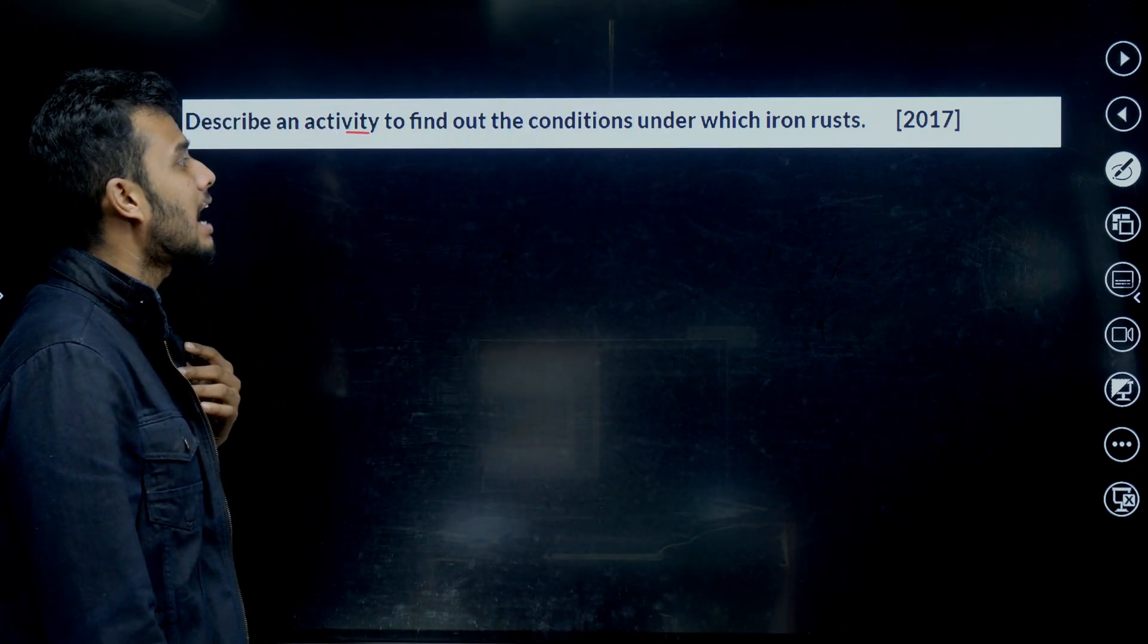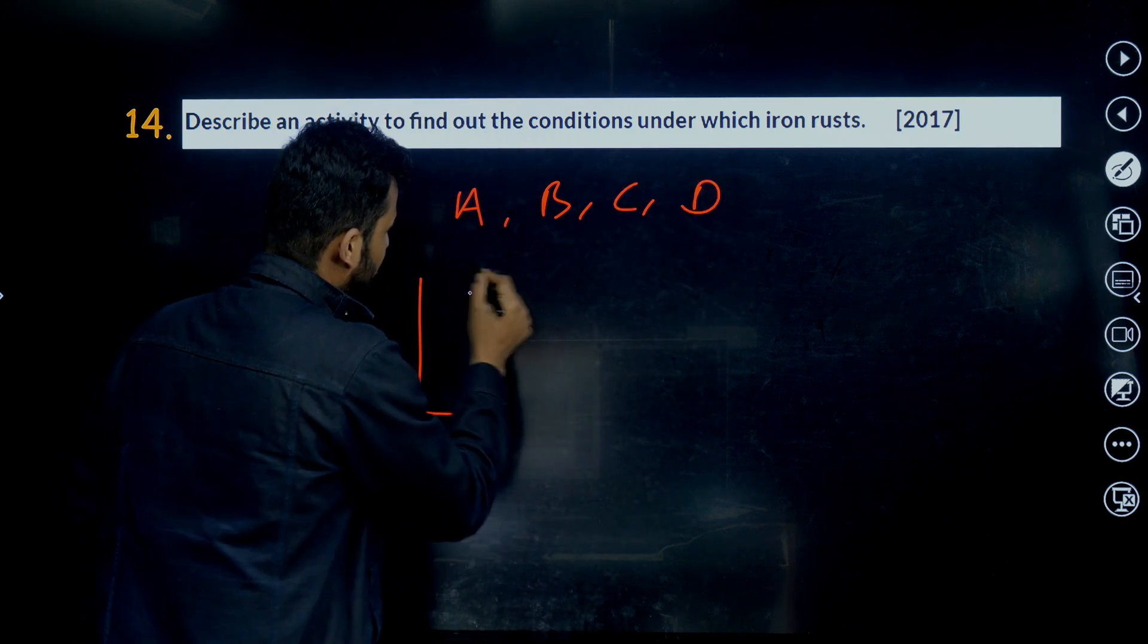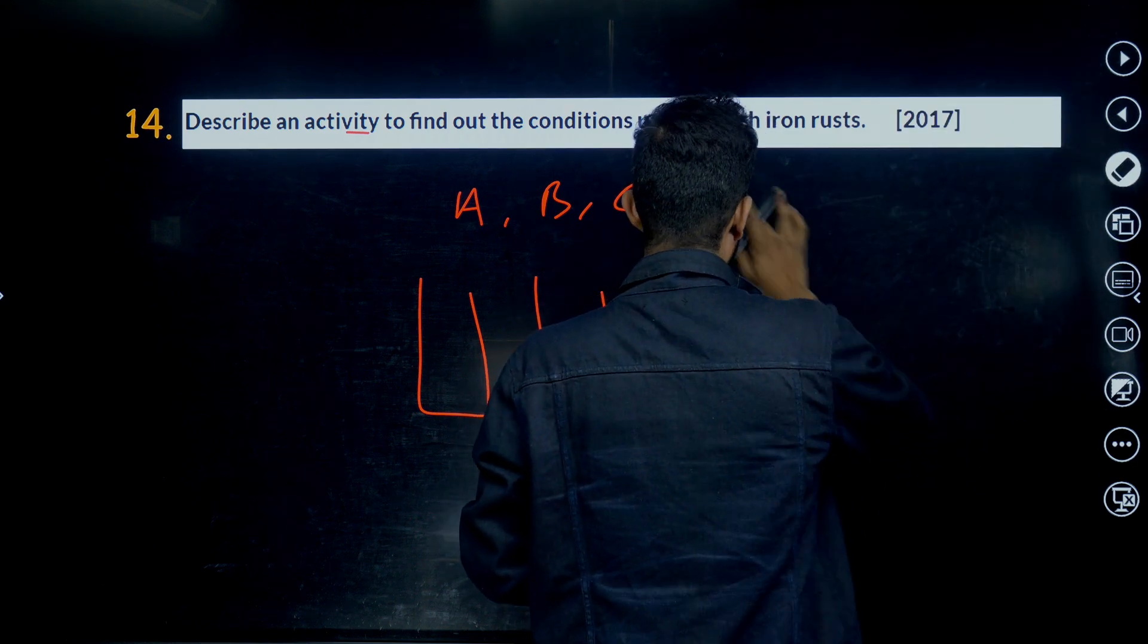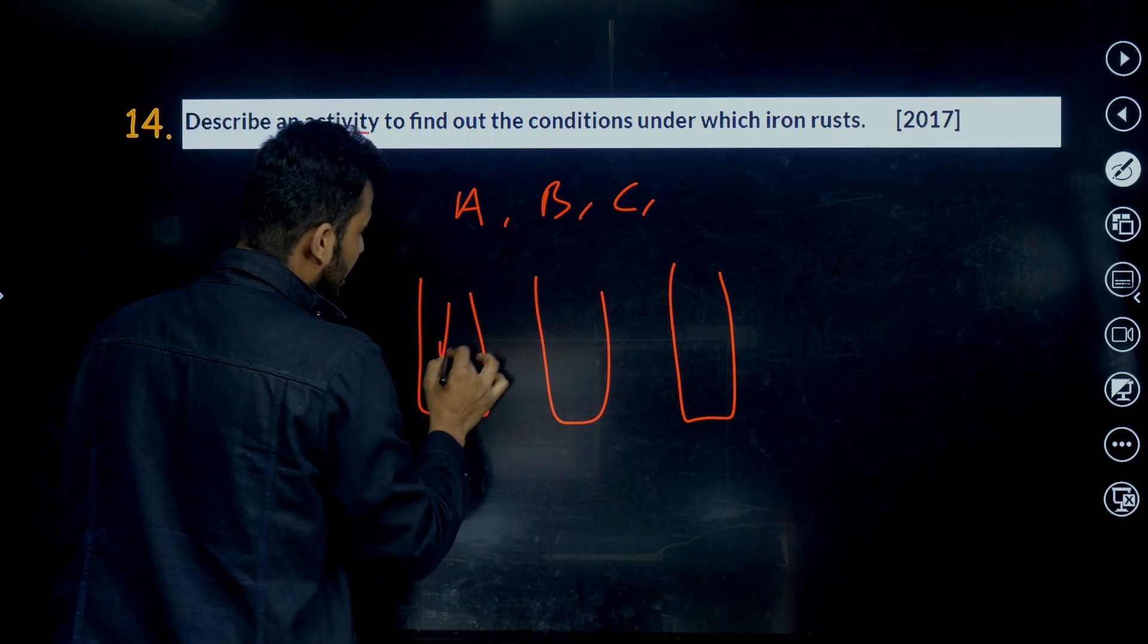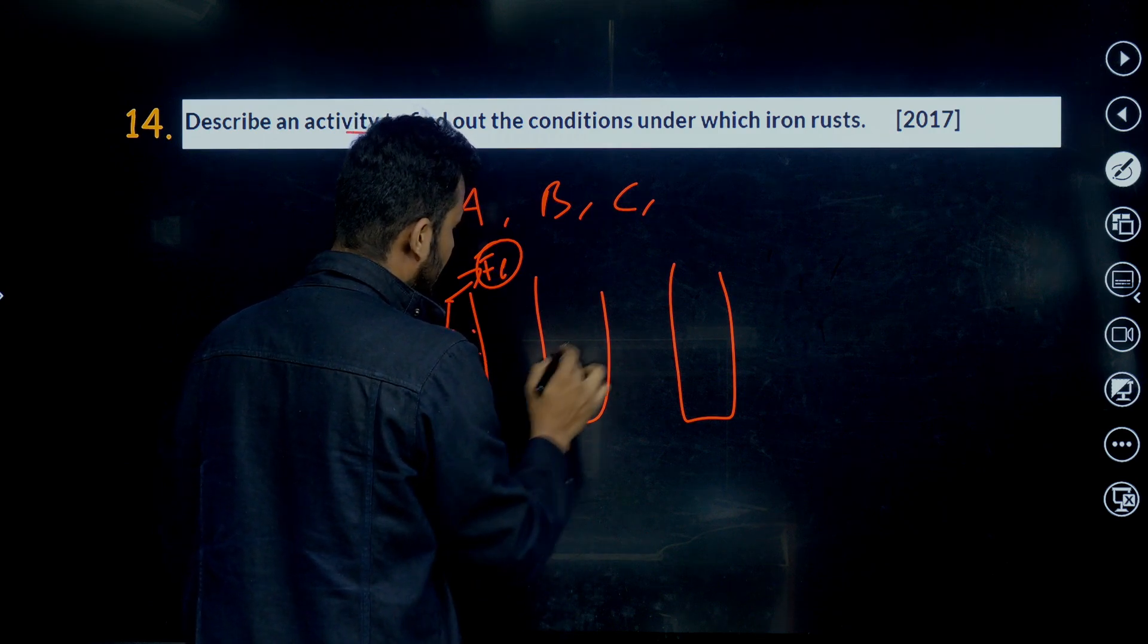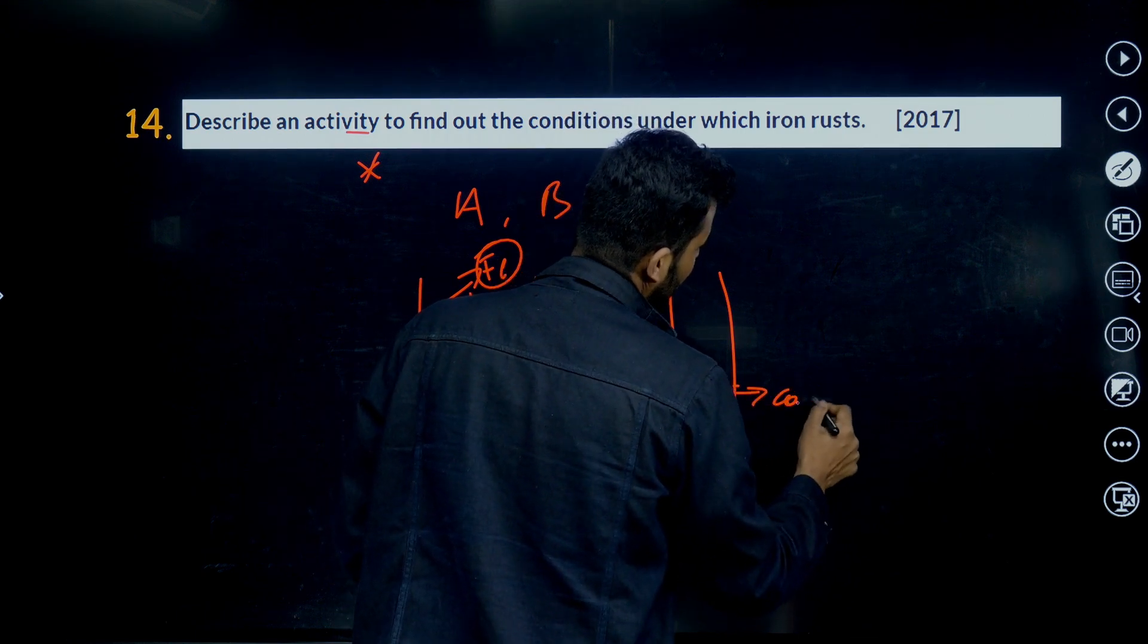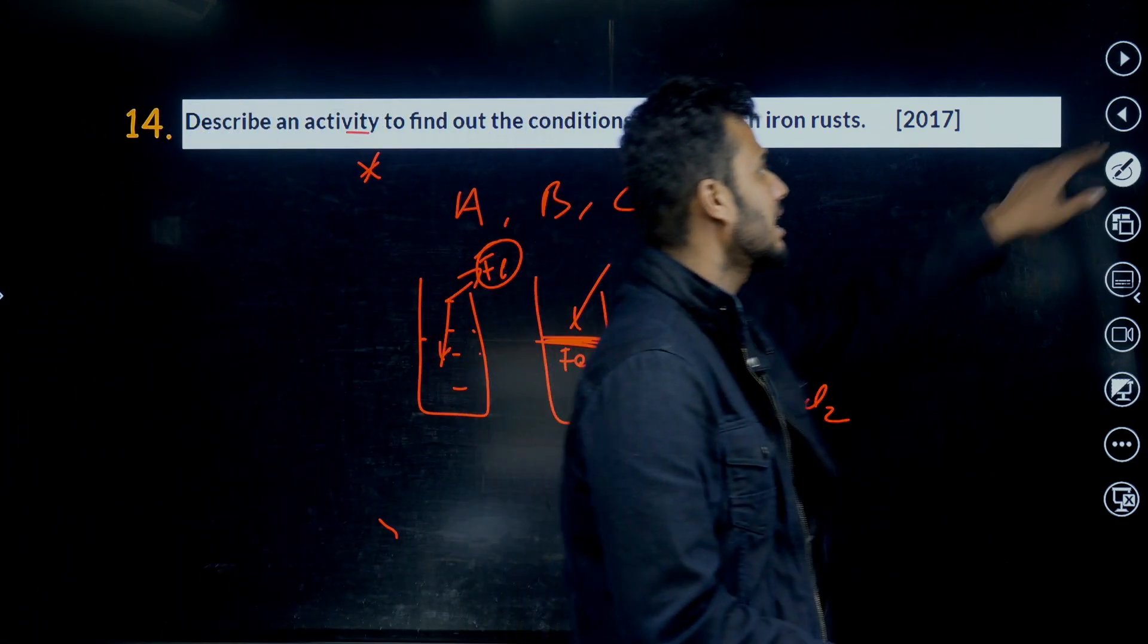Describe an activity to find the condition under which iron rusts. We take test tubes. Only three test tubes. Only three. Only three test tubes we need to take. It's an important question, please note this. One test tube, only one iron metal with water, only water. Iron metal with water. With oil. And iron metal with only CaCl2. CaCl2 absorbs moisture of the air. Moisture of the air, it only absorbs the moisture. It is this experiment.